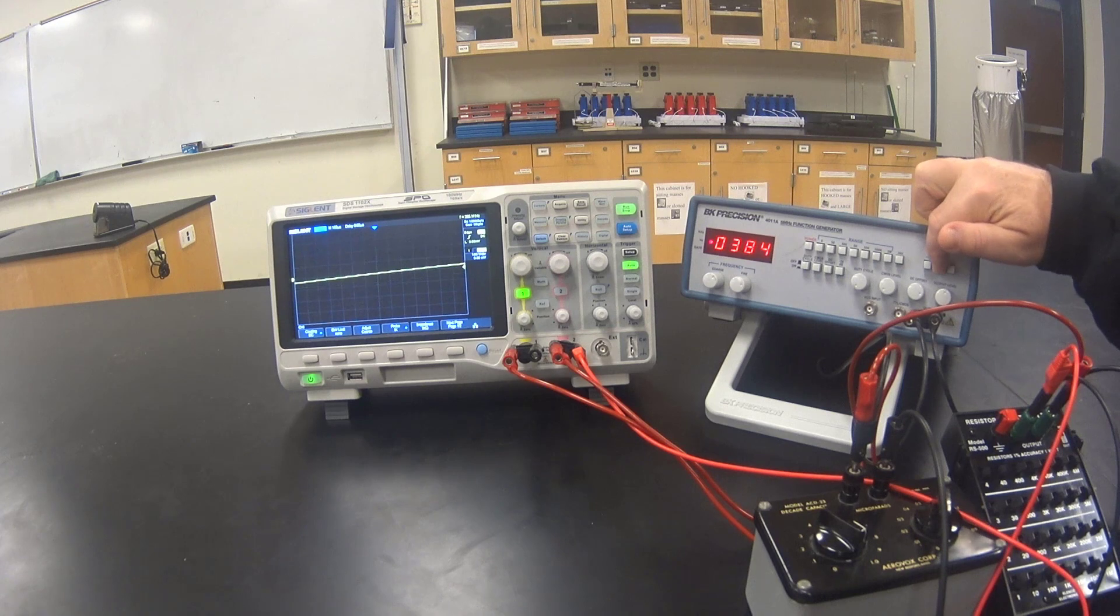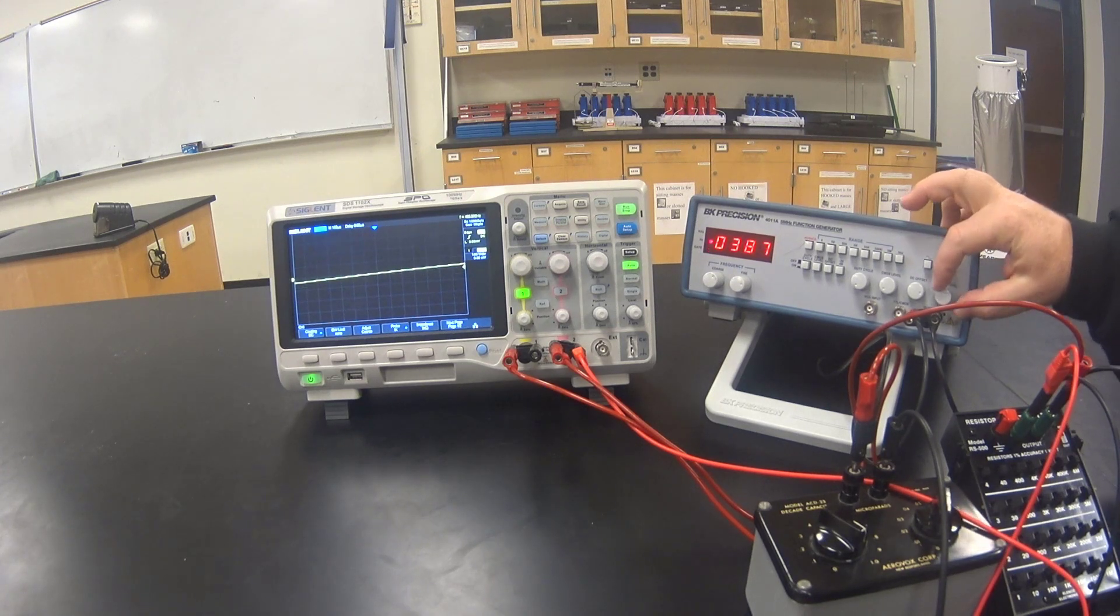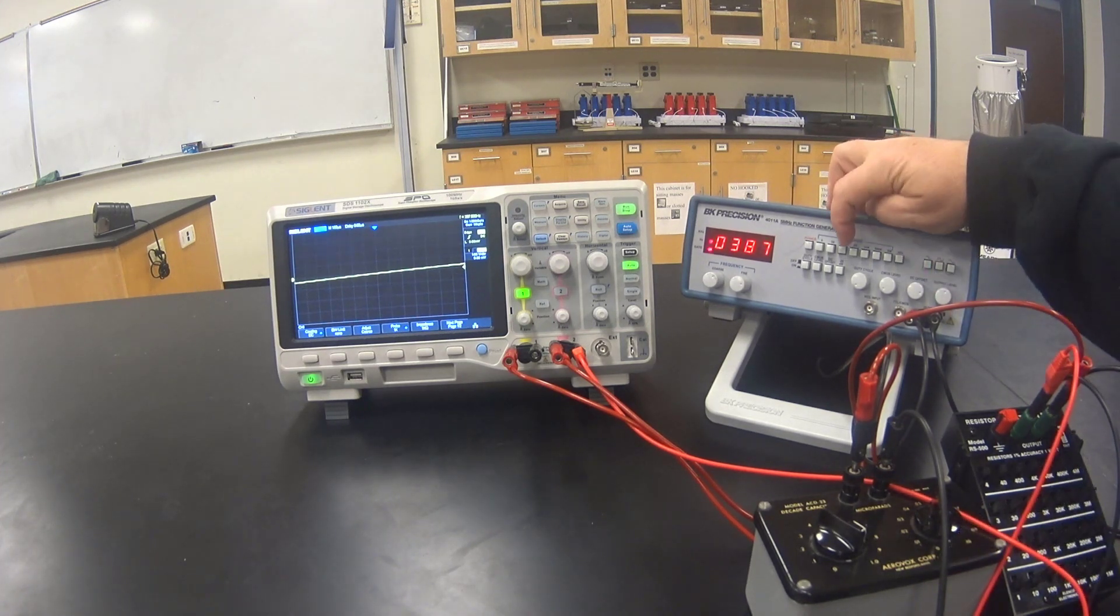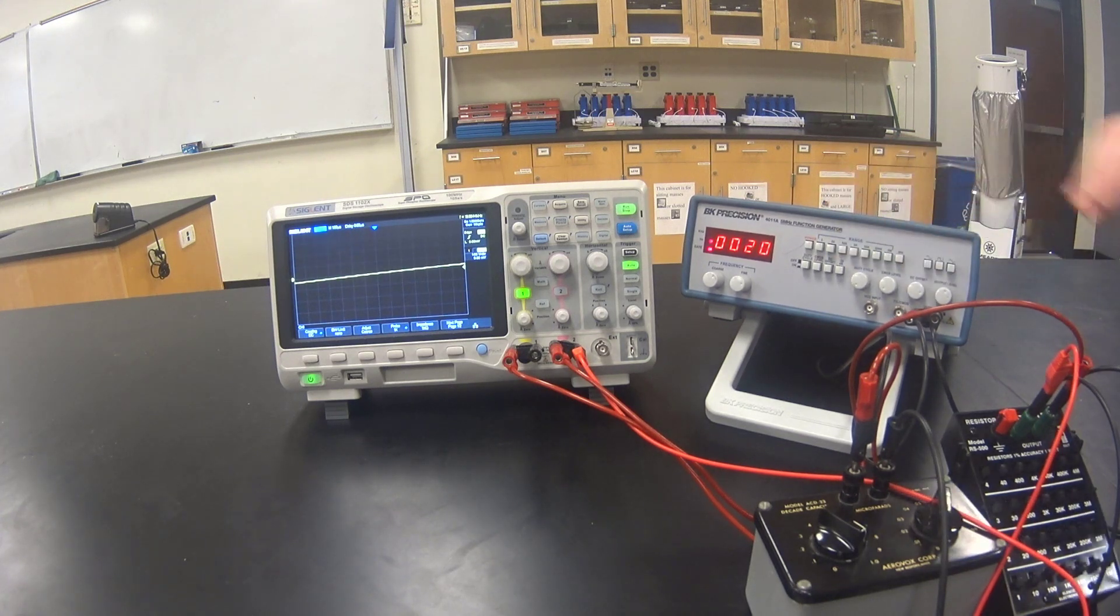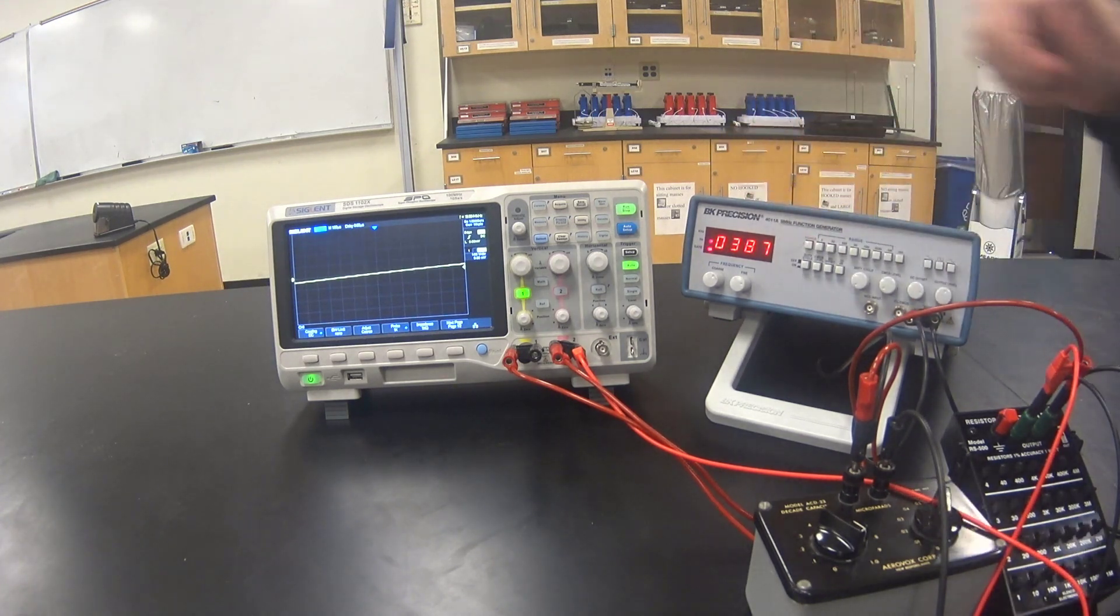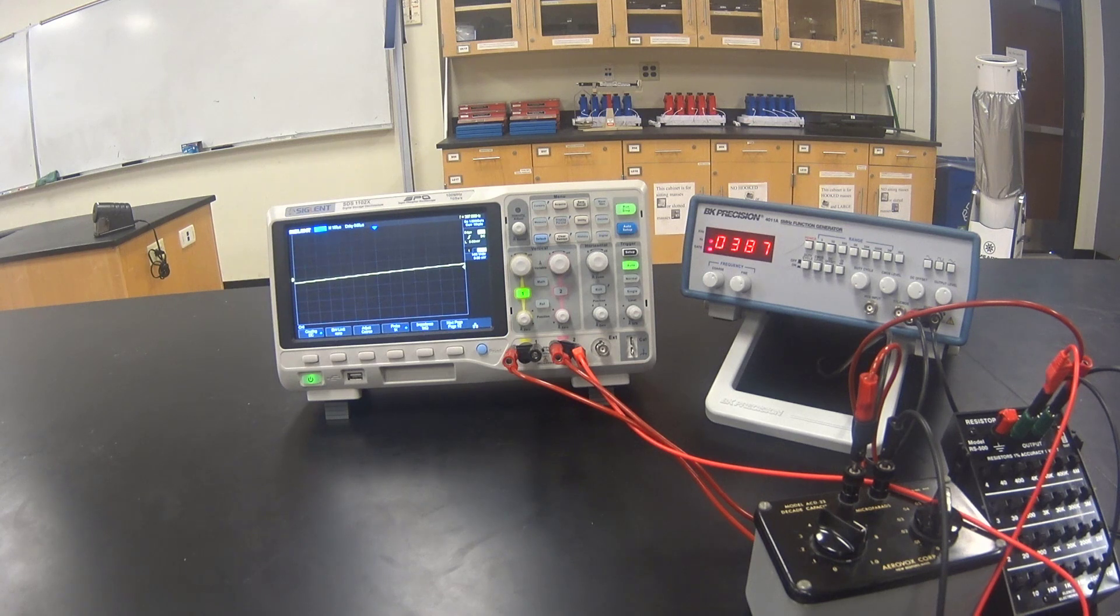Select the square wave. Adjust the output voltage to about half way and set the frequency to somewhere between 300 and 500 Hz.